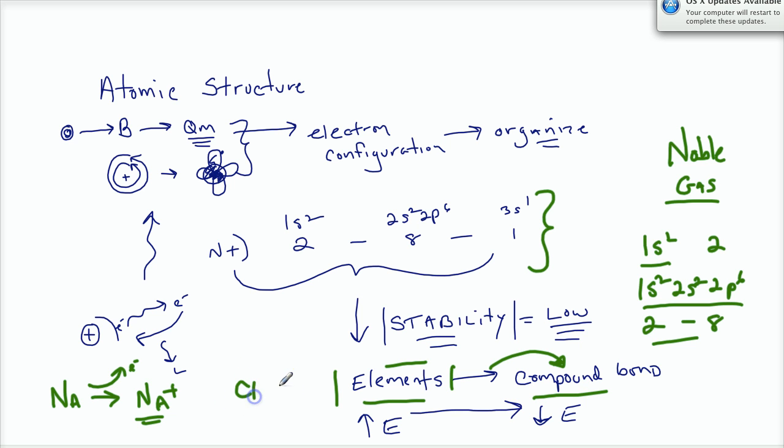Chlorine, when it bonds, loves to become chlorine negative. So it gains an electron to become stable, to become as stable as argon. So these elements do these things. And we learned about chlorine gaining one more electron, sodium losing.